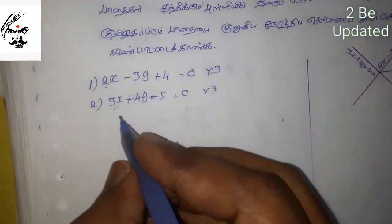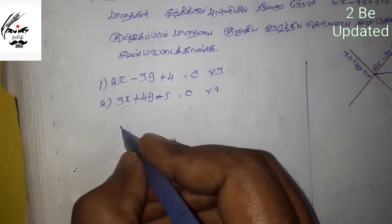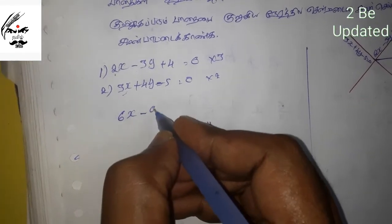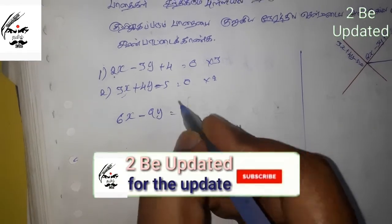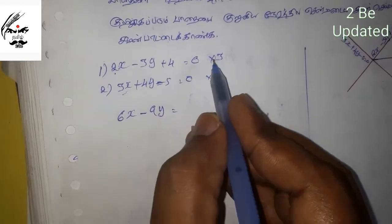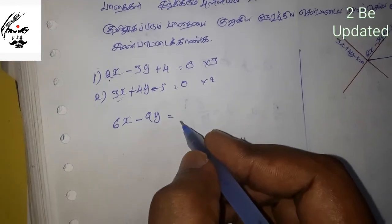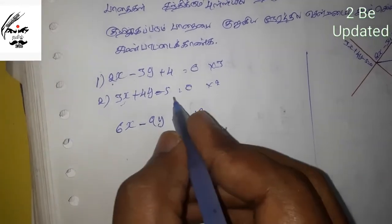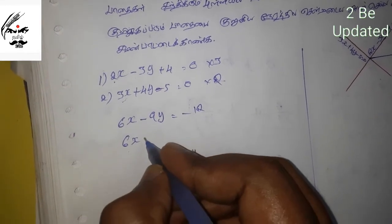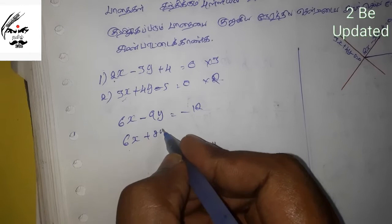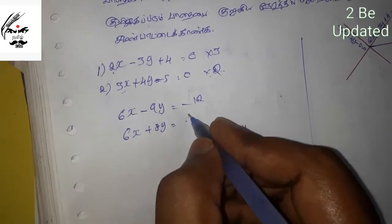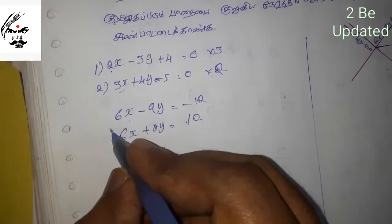6x minus 9y is one equation. If I multiply the second equation by 2, I get 6x plus 8y is equal to 10. Subtracting these equations, minus 3y minus 4y gives minus 7y, then plus 4y gives minus 17y.